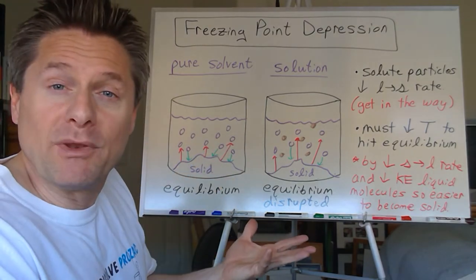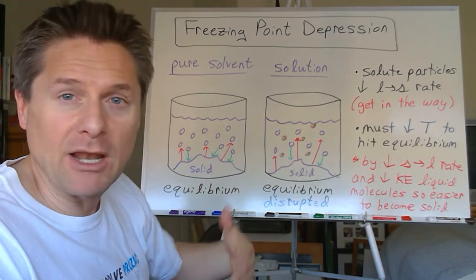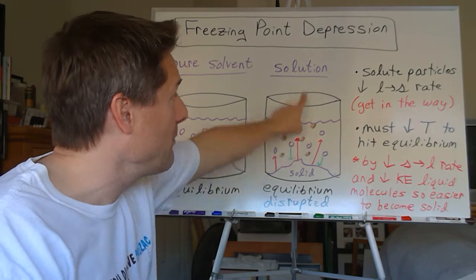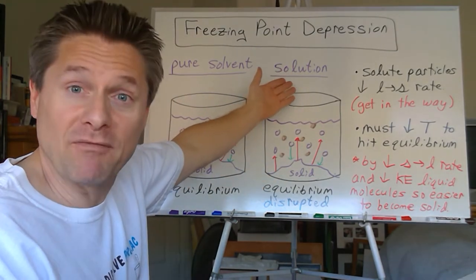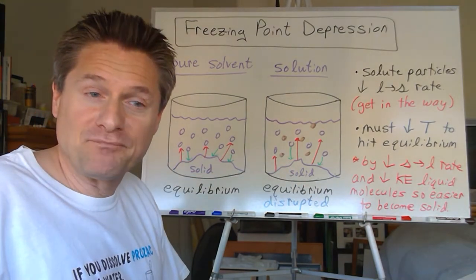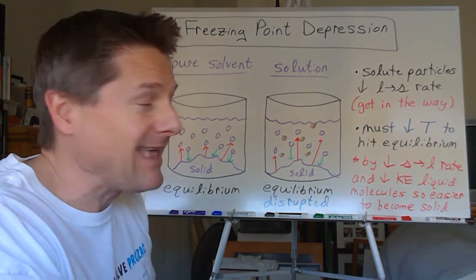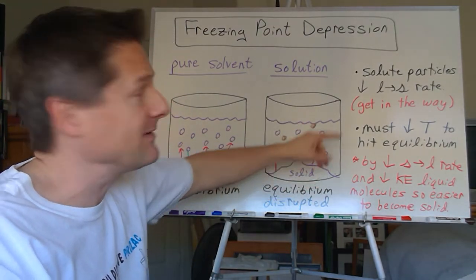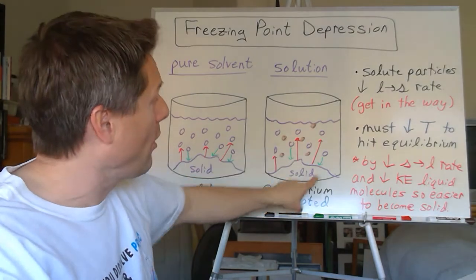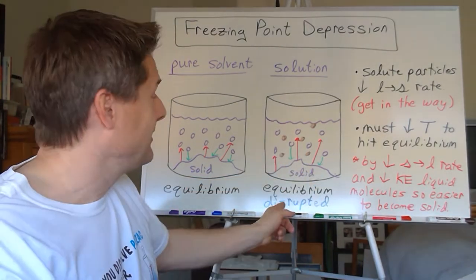The rate of molecules leaving the solid equals the rate of liquid molecules incorporating back into the solid — green arrows and red arrows are the same — so you have equilibrium between solid and liquid phases. But now, what if we add solute particles? Those get in the way. They're blocking the path, just like they make it harder to vaporize and reduce vapor pressure. It makes it harder for liquid molecules to incorporate into the solid, so it reduces the rate of the liquid-to-solid transition.